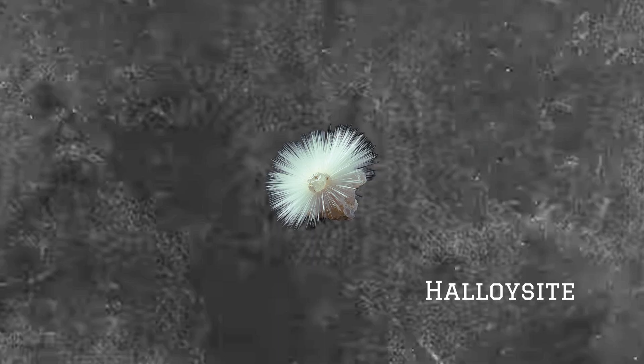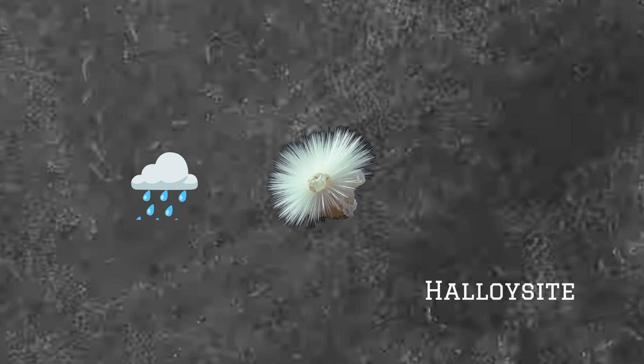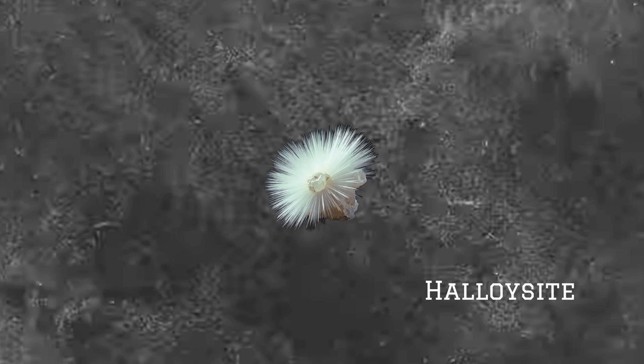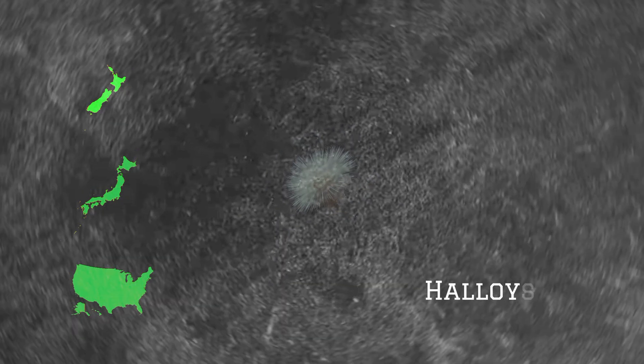Halloysite is formed through the hydrothermal alteration or weathering of primary aluminosilicates, and is found in volcanic ash deposits, bauxite deposits, and certain soils, with significant occurrences in New Zealand, Japan, and the U.S.